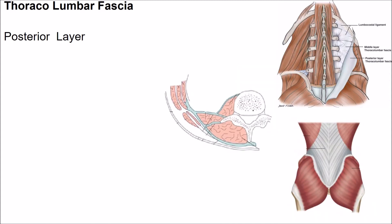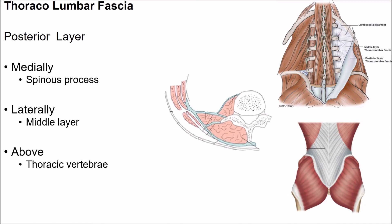The posterior layer of the thoracolumbar fascia covers the posterior surface of the erector spinae muscle and is attached medially to the spines and supraspinous ligaments of the lumbar vertebrae. Laterally, the posterior layer blends with the middle layer along the lateral border of the erector spinae muscle. Above, the posterior layer enters the thorax and attaches medially to the spines of thoracic vertebrae and laterally to the angles of ribs. Below, the fascia is attached to the dorsal surface of the sacrum and the dorsal surface of the iliac crest in a U-shaped manner.